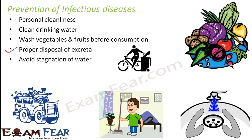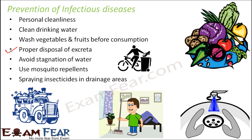Avoid stagnation of water, because wherever there is stagnant water, bacteria might grow and mosquitoes will breed. Mosquitoes are extremely harmful as they can cause several diseases like malaria, chikungunya, and dengue. Use mosquito repellents as a prevention, and spray insecticides in drainage areas regularly to get rid of harmful insects.